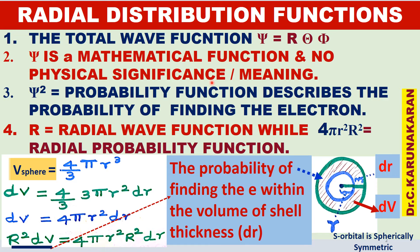The wave function itself has no physical significance or meaning. Whereas ψ² has physical meaning, because it gives us the probability of finding the electron per unit volume, or per unit distance if it is one-dimensional. The square of the wave function, ψ², is called the probability function, which describes the probability of finding the electron per unit volume or per unit distance.